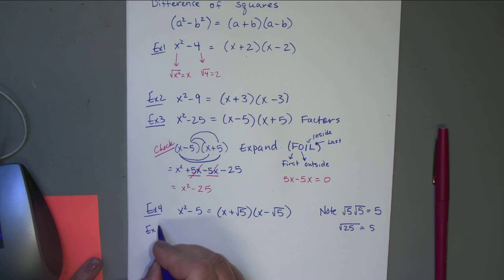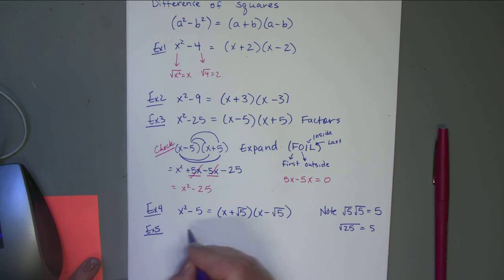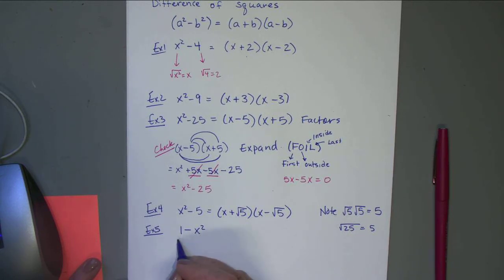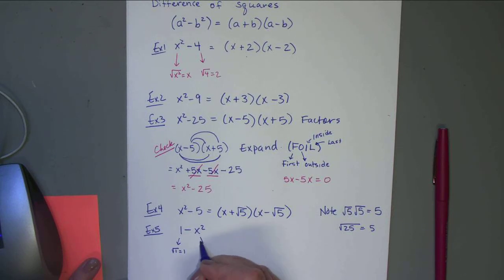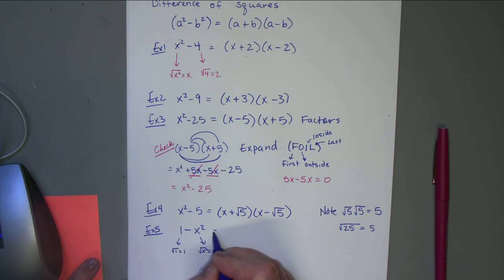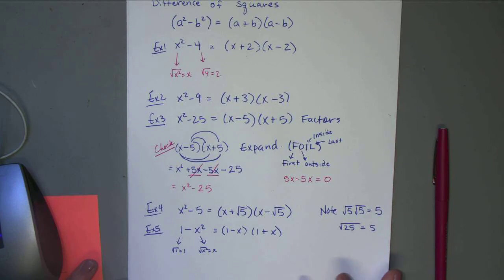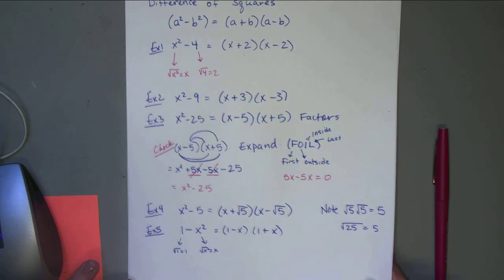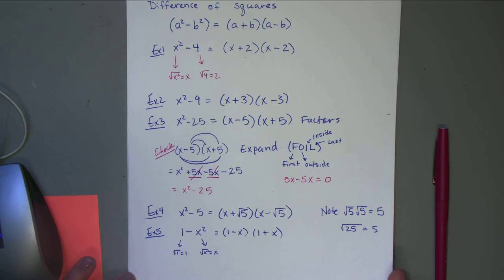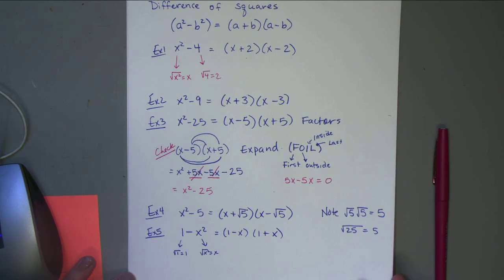We could also have this backwards. So you could have 1 - x², which is also a difference of squares. The square root of 1 is 1, and the square root of x² is x. So this would factor as (1-x)(1+x). It can go backwards as well. That's called the difference of squares because the word 'difference' means subtract.